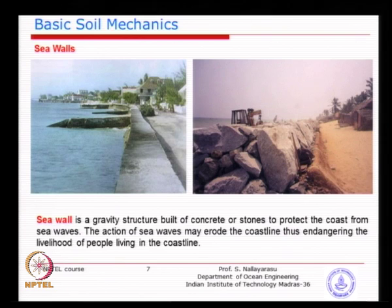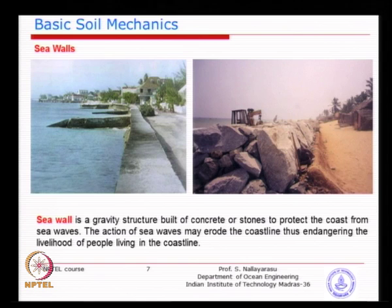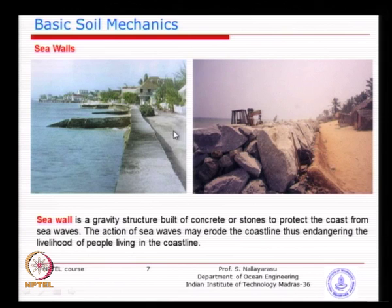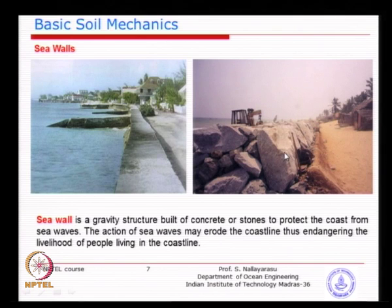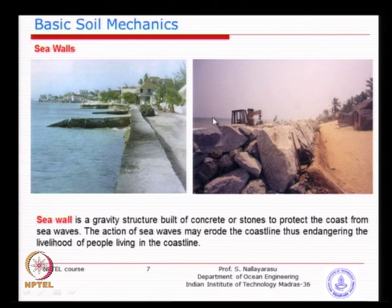The sea wall does two things: it retains the soil on the land side exposed to sea activity, and it forms a stable ground. Without this wall, soil would be carried away every day and the land would keep reducing. The sea wall can also be made of just rocks dumped around the coastline. However, all depends on durability and sea conditions - if the sea condition is very high, rock dumping alone will not work and you may require a proper constructed wall.